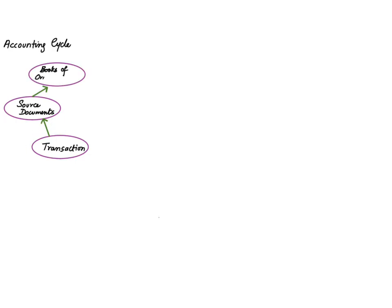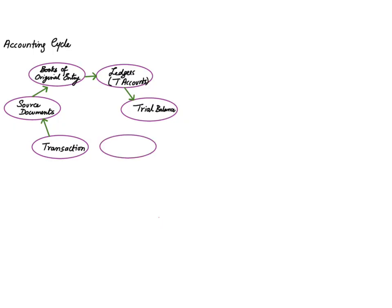After a transaction, we move forward to generating a source document, also known as a documentary record. From the source document we move to books of original entry, also known as books of prime entry. Then we make ledgers — books containing T-accounts. Finally we have the trial balance, from which we make financial statements: the income statement and balance sheet. Then the process starts again.